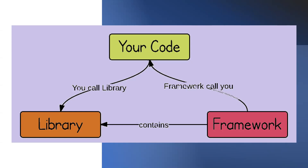When it comes to how we code with a library or framework — our code needs to tell the library what to do exactly. So this is my requirement, do this work. Our code calls the library and tells it what to do. That is how a library works.